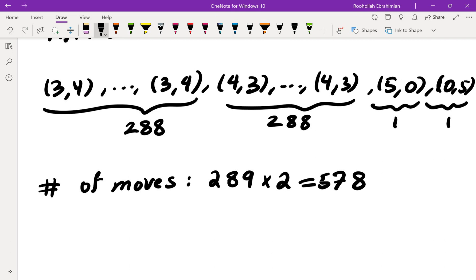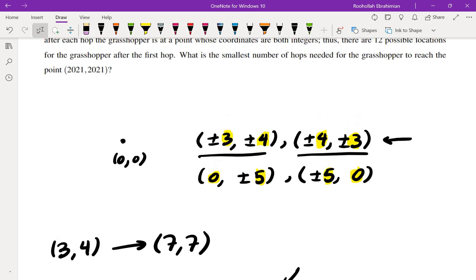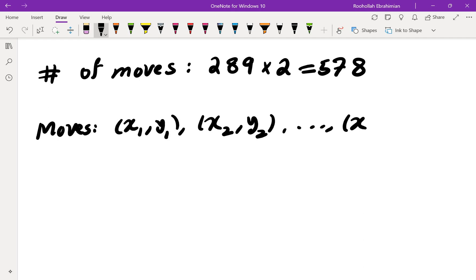Can we show that this is the smallest value? It looks like it must be the smallest value, so how do we articulate that? Let's assume that the moves are (x₁, y₁), (x₂, y₂), all the way to (xₙ, yₙ). We have to show that n is at least 578, or if that's not possible, come up with another example. But it's probably the best way of getting to (2021, 2021).